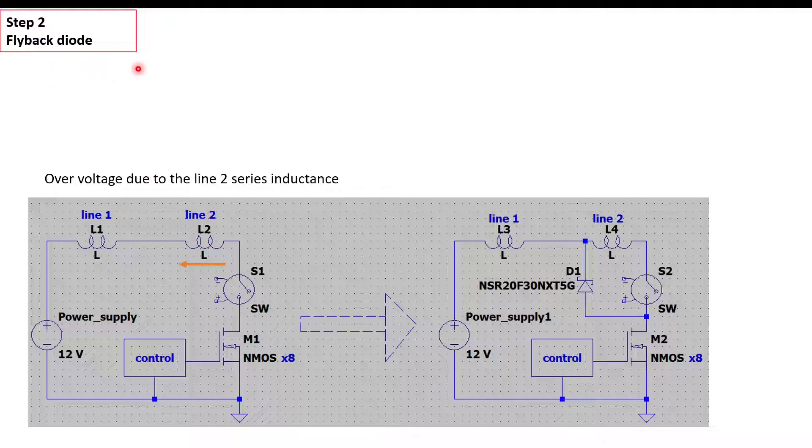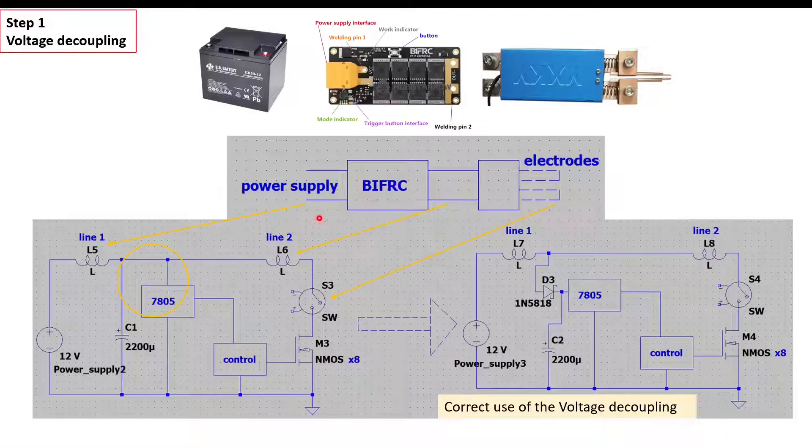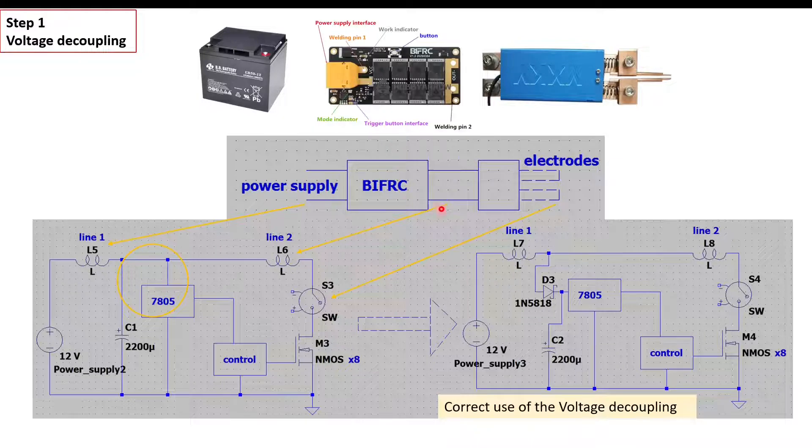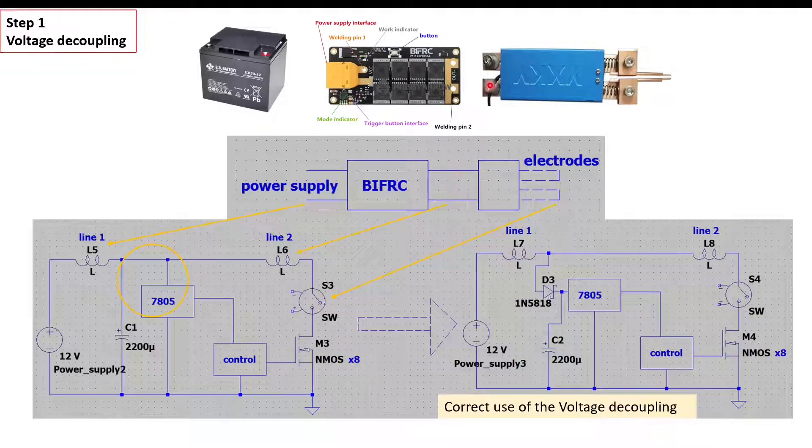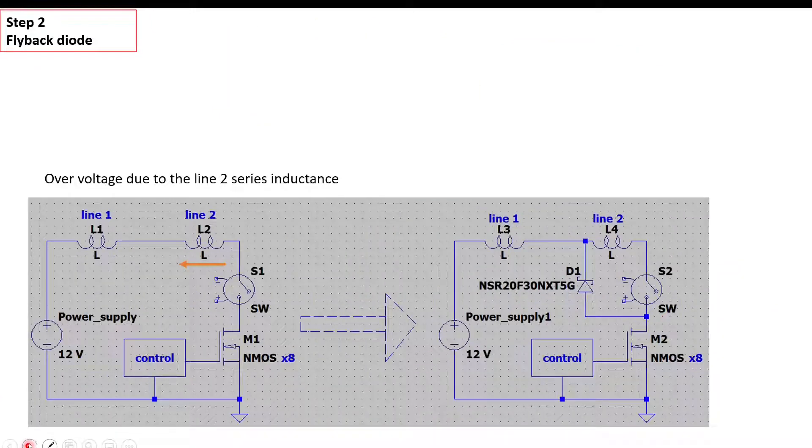The second step is flyback. We have line one and line two. Line one refers to the cables between the battery and the board. Line two represents the inductance between the board and the spot welder tip. As soon as we close the MOSFET, during the transitory the current flows here.